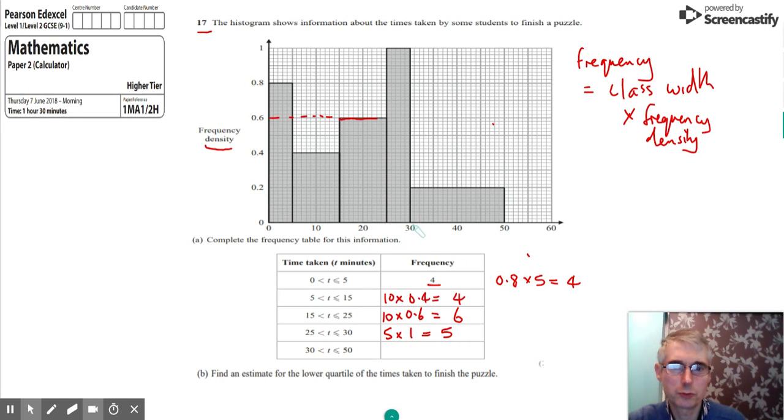And the final group, which is 30 to 50, has got a class width of 20. And the height of that group has got a frequency density of 0.2. So times that by 0.2, and we get 4 in that final group. So that's the frequency table completed.